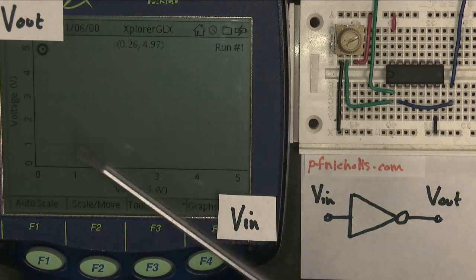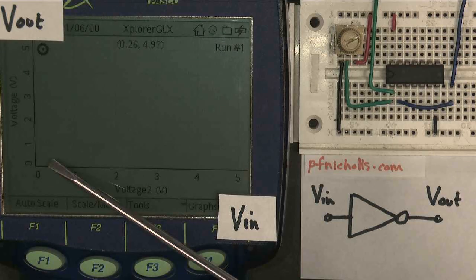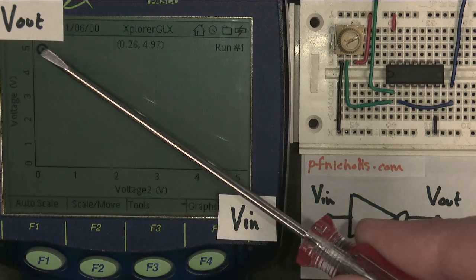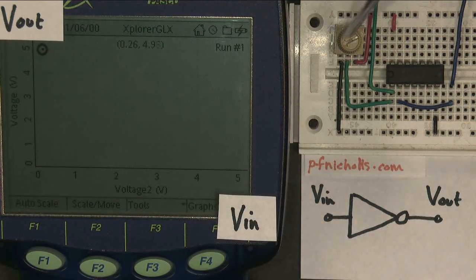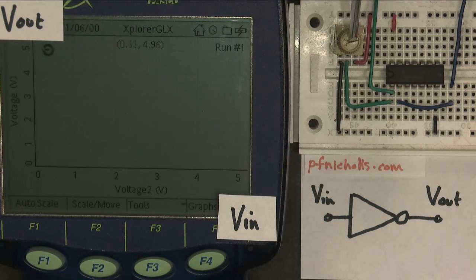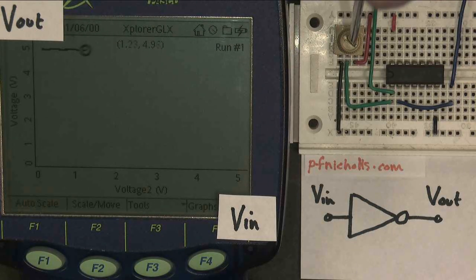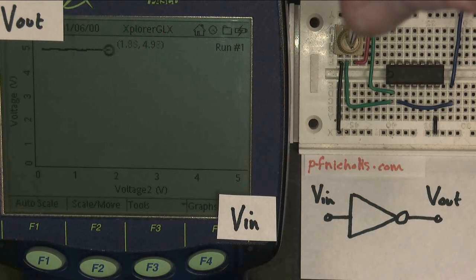So in exactly the same way as we have before, when the input voltage is 0, the output voltage is 5. When I increase the input voltage, the output voltage stays at 5 volts, which is logic 1. It stays at 5 volts, which is logic 1, as I increase the input voltage.